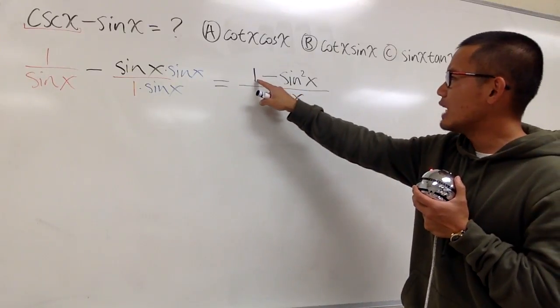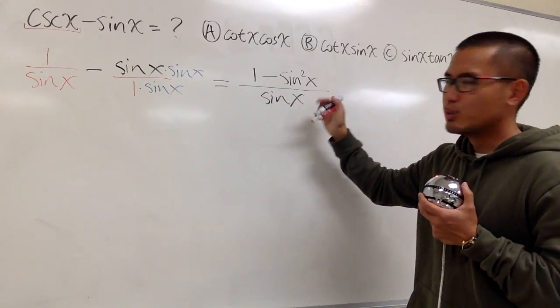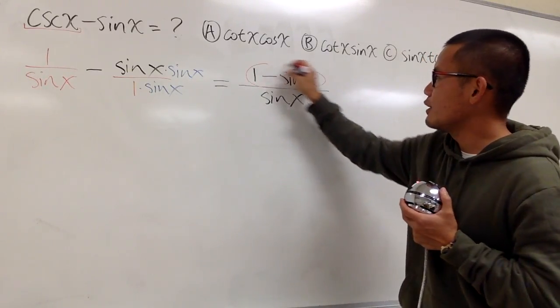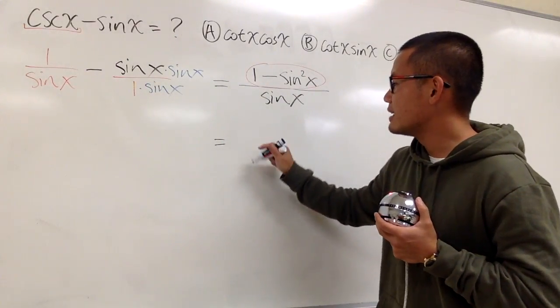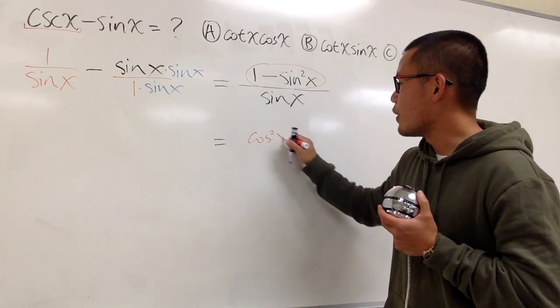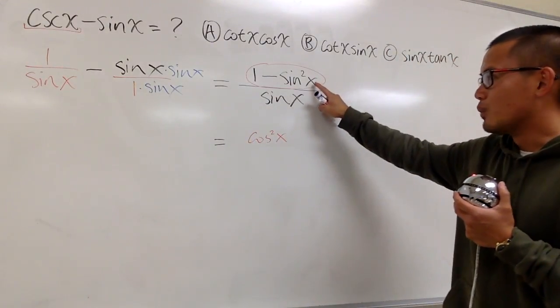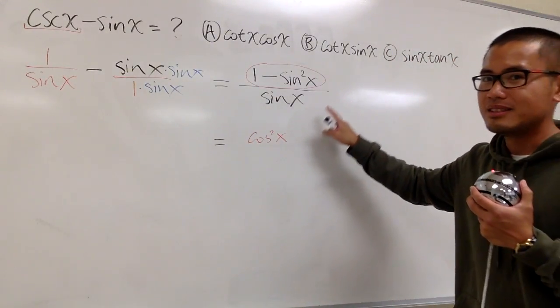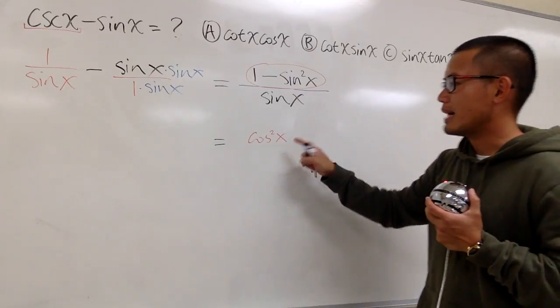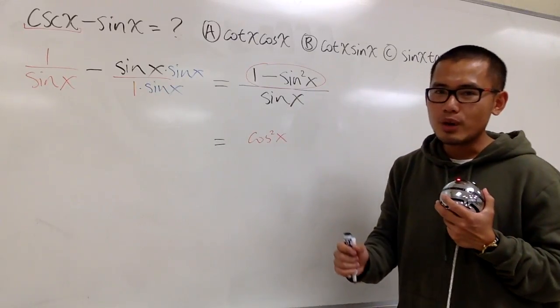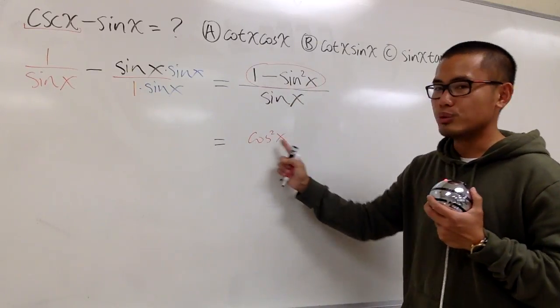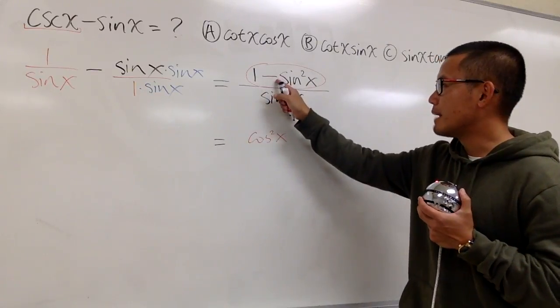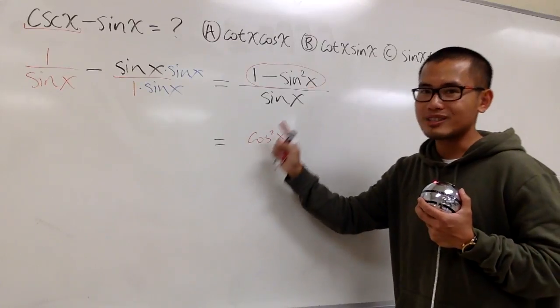And we see that we have 1 minus sin square x. Do we recognize anything right here? Yes, we should. This right here is the same as cosine square x. And once again, we have to know these identities really well. This is the Pythagorean identity. Sin square x plus cosine square x is equal to 1. And this is another version of that identity. 1 minus sin square x is equal to cosine square x.